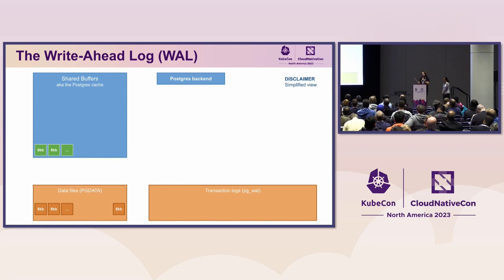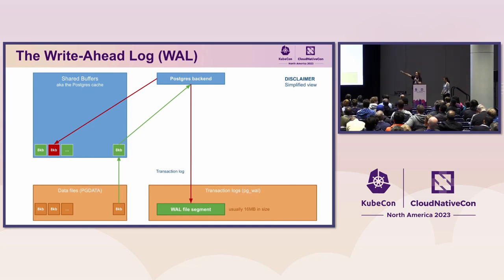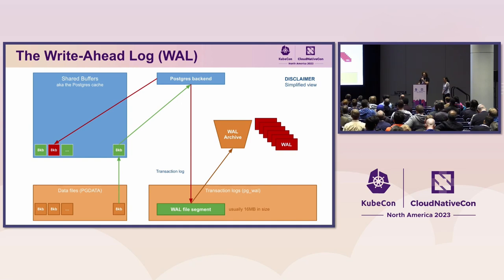When a Postgres backend requests a page from disk, the page is first loaded in the shared buffers and then returned to the backend. When a backend changes the content of a page in memory, that change is first saved in the write-ahead log, not the data files. This is the reason why this is called write-ahead log, or simply WAL. For better data durability, Postgres allows you to archive each WAL file in another location — this is normally referred to as the WAL archive.